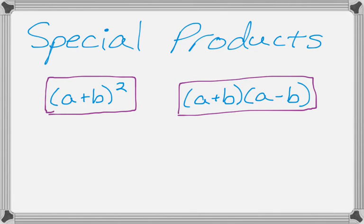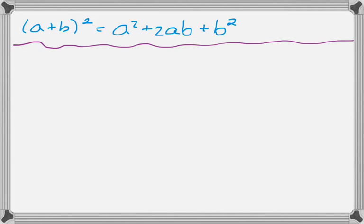They're so common that you really just need to know, as soon as you see it, you need to pretty much know what the answer is. So if you see the quantity a plus b squared, you need to know that that's going to be a squared plus 2ab plus b squared.